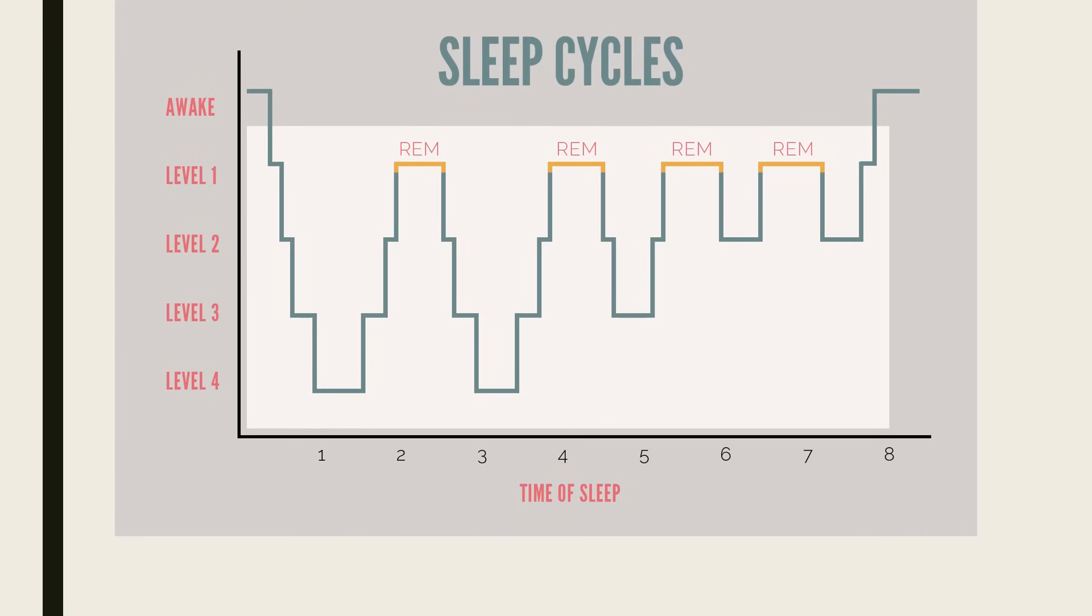For example the order looks something like this. Stage one light sleep. Stage two light sleep. Stage three deep sleep or slow wave sleep. Stage four. Stage three. Stage two. REM sleep. After REM sleep the individual returns to stage two of light sleep and begins a new cycle.